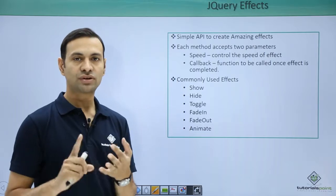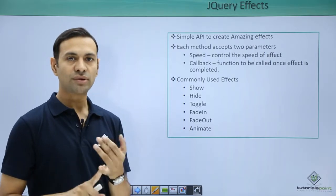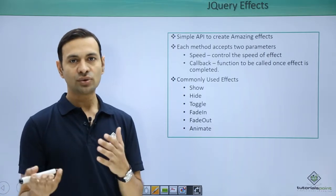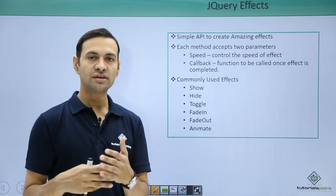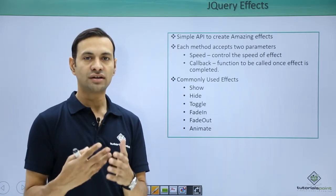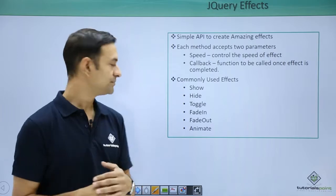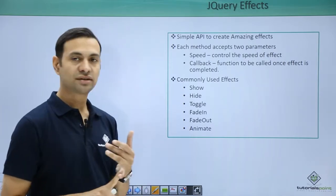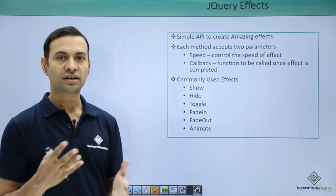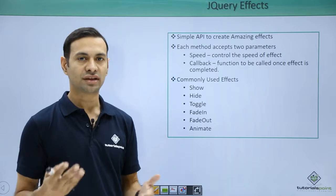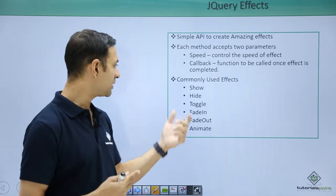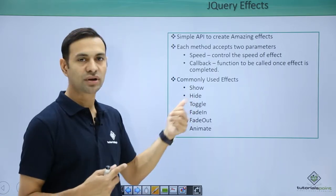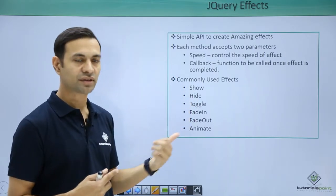Toggle basically shows an element if it is hidden, or hides it if it is shown. Then there is fade out, fade in, and animate. Animate is the generic method which can do everything — show, hide, toggle, fade in, fade out.